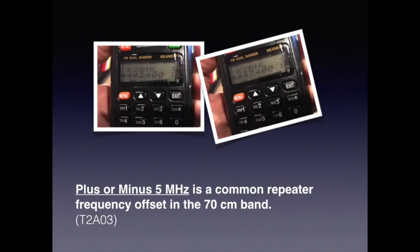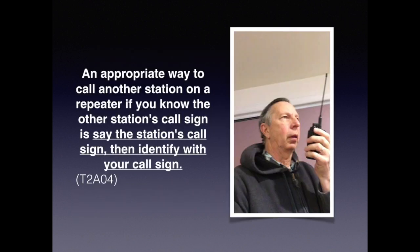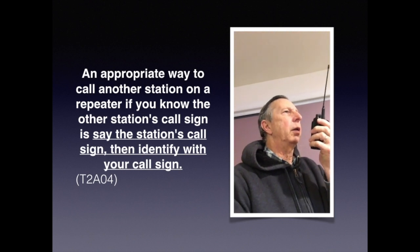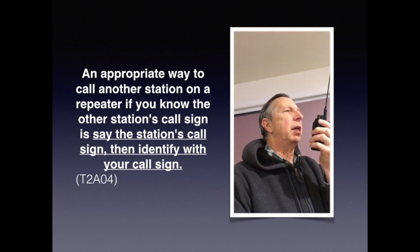The offset on the 70 centimeter band is 5 megahertz, and the test question reads: plus or minus 5 megahertz is a common repeater frequency offset in the 70 centimeter band. The next question is: an appropriate way to call another station on the repeater if you know the other station's call sign is to state the station's call sign and identify with your call sign. For example: N2RRQ, this is KE2GS.